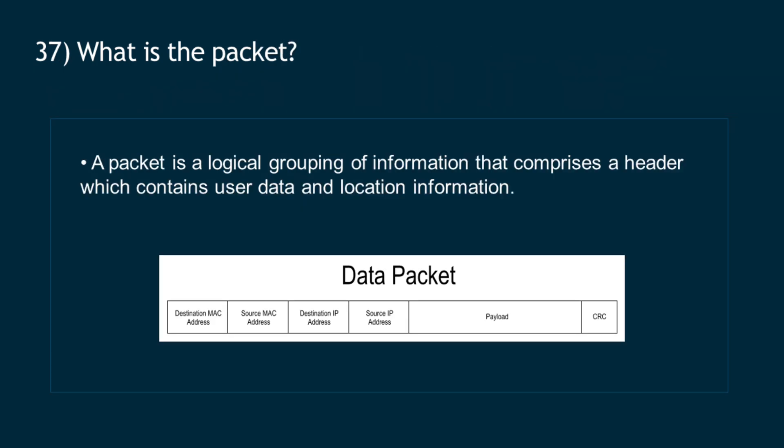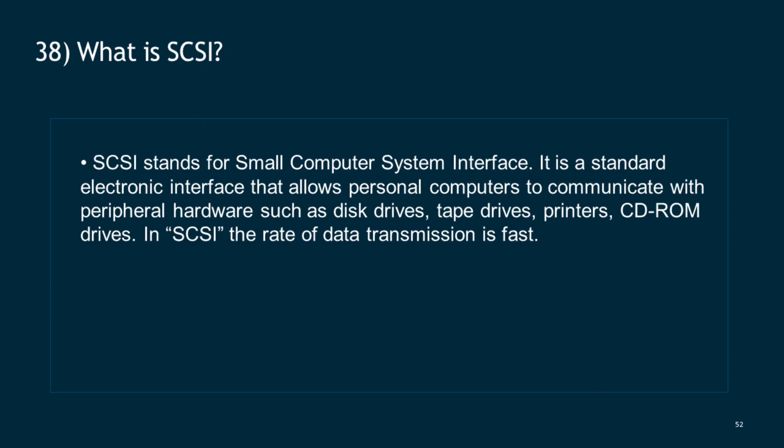Question 37: What is a packet? A packet is a logical grouping of information that comprises a header which contains user data and location information. Question 38: What is SCSI? SCSI stands for Small Computer System Interface. It is a standard electronic interface that allows personal computers to communicate with peripheral hardware such as disk drives, tape drives, printers, and CD-ROM drives. In SCSI, the rate of data transmission is fast.